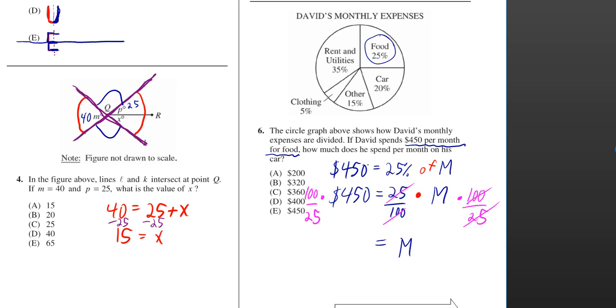Well, we know $450 is 25% of his total monthly expenses. That's what I mean when I write M here.